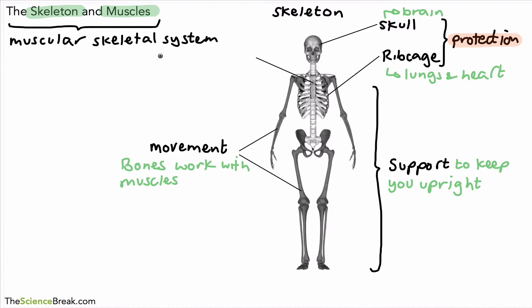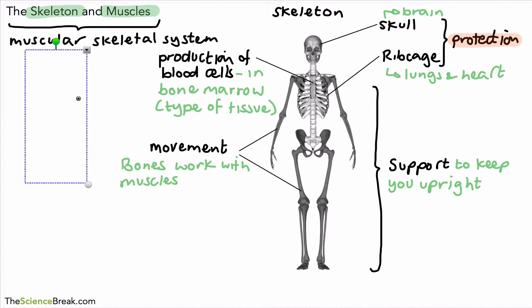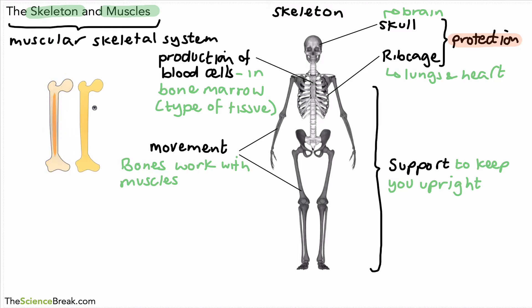One final role, which is sometimes forgotten, is the production of blood cells. Some bones produce blood cells, and this is done in the bone marrow. Some bones have bone marrow, which is a type of tissue, that produces blood cells. If we were to slice a bone in half, inside in that orangey colour is where you would find the bone marrow, which can produce red blood cells and white blood cells.